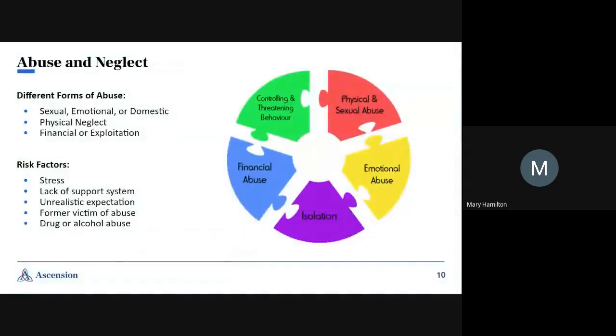Abuse and neglect. There are different forms of abuse. We have sexual, emotional, domestic. There's physical neglect, financial abuse, and exploitation.